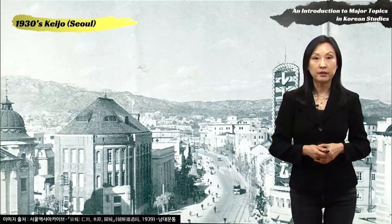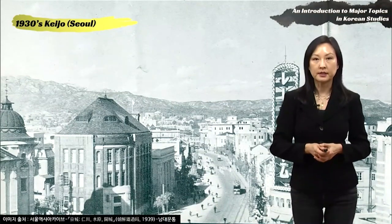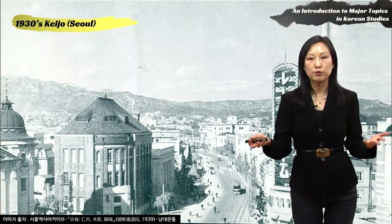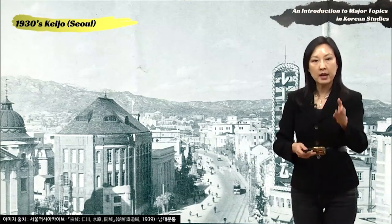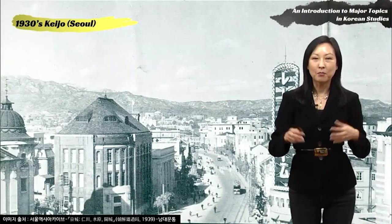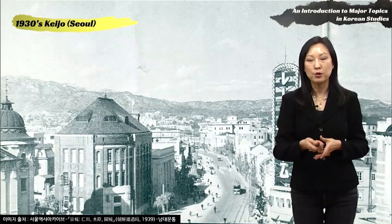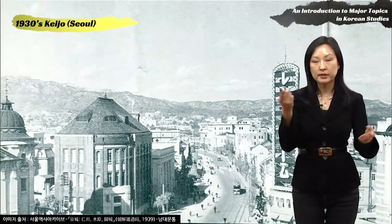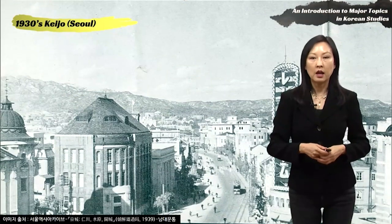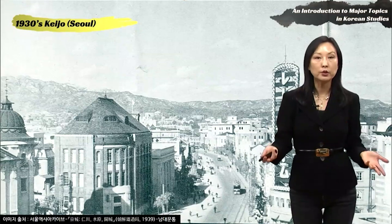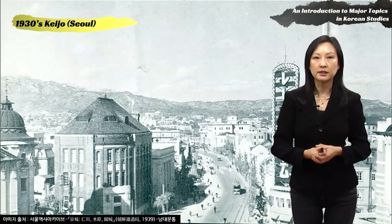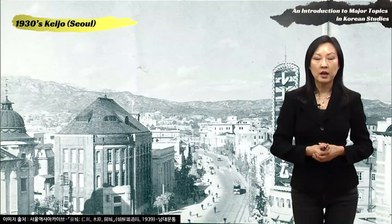However, by the 1930s we can visibly see a drastic difference in Seoul. Rather than being dominated by dirt roads, unpaved crooked streets, and traditional-style buildings, 1930s Seoul looks more similar to what we see today. There are modern-style concrete buildings, paved roads, an electric streetcar — which was actually invented before the colonial period but became more widely used during it — and electricity, running water, and other modern facilities. We can physically see the modernization, at least in the capital.